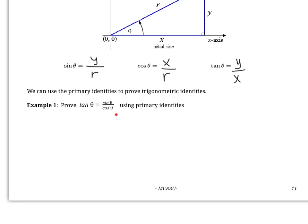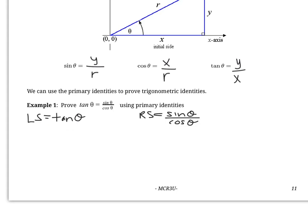We're going to prove that tan θ equals sine θ over cos θ using the primary identities. One way to prove identities is to break the equation into its left side and its right side. On our left side we have tan θ, and the right side equals sine θ over cos θ. If I can prove that both sides simplify to the same thing, we will prove the identity is true. I can use the primary identities to simplify: tan θ is the same as y/x, so I rewrite the left side as y/x.